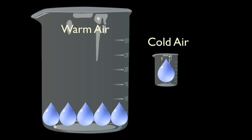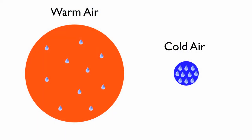Think of warm air as the big beaker and cold air as the smaller beaker, with both holding the same number of water droplets. In the big beaker it's only filling up about 20%, while in the small beaker it's filling up almost 100% — same quantity of water, just different temperatures. The cold air mass, like the smaller beaker, gets filled up much quicker than the bigger beaker of warm air. The red circle represents warm air with molecules spread far apart, so you can squeeze a lot of water vapor in. The blue circle representing cold air is already pretty much filled up, so the warmer air mass can hold a lot more moisture.